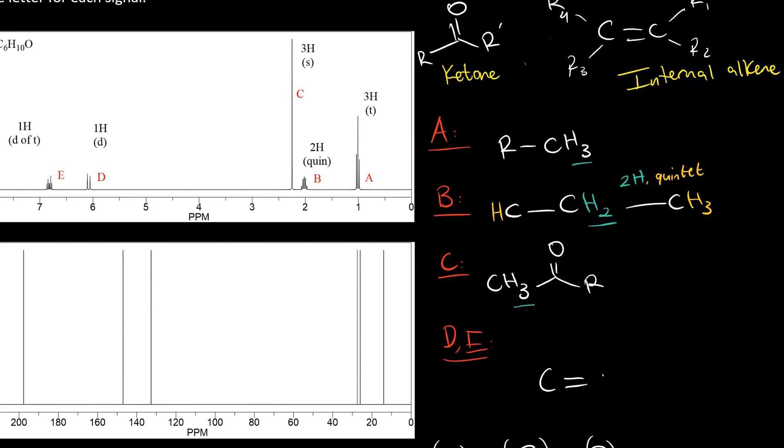So if we pretend we have an alkene, this hydrogen here, that we're calling signal E, should have 1 proton neighbor to the right, for example, and 2 to the left.